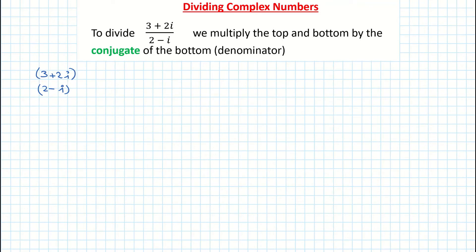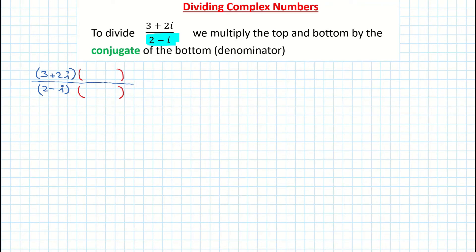I'm going to extend my divide line a little bit further. In a different colour pen, I'm going to multiply the top and the bottom of my fraction by the conjugate of the bottom. The 2 minus i is the denominator, and the conjugate of 2 minus i is 2 plus i. So I'm multiplying the top and the bottom by 2 plus i.